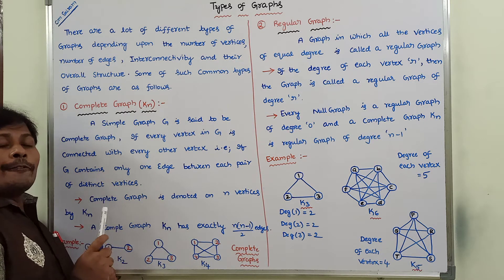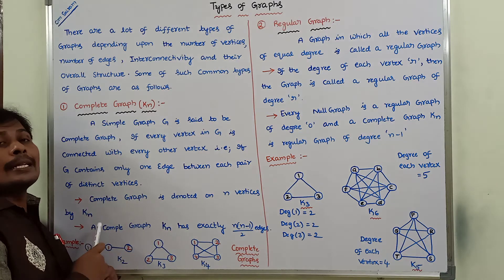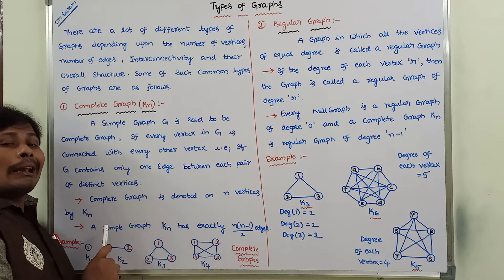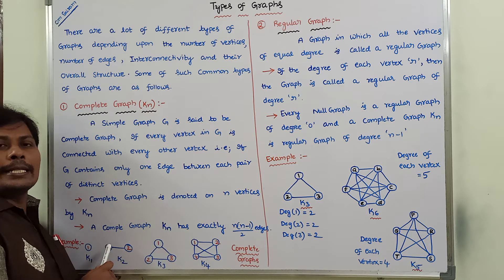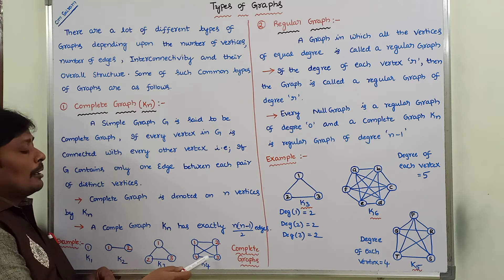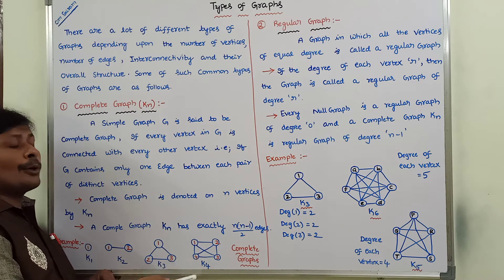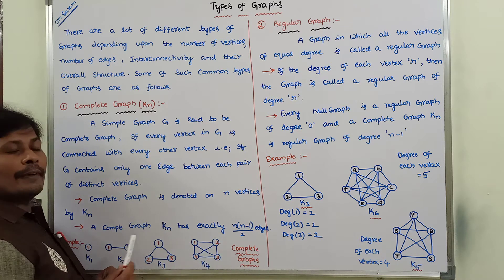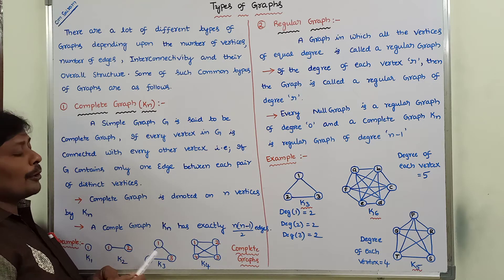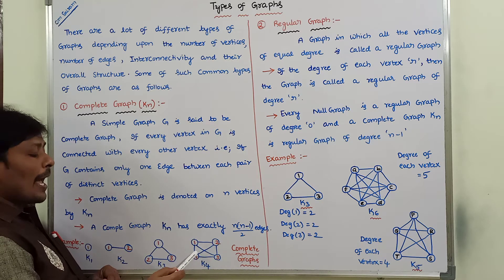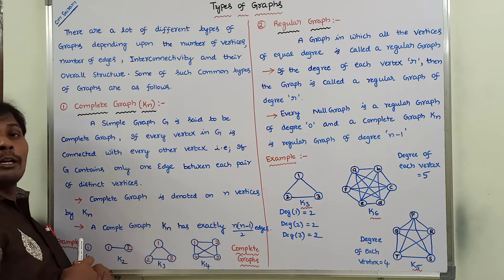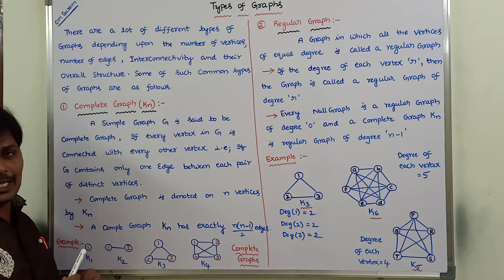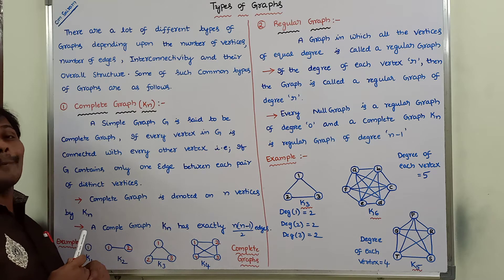To be a complete graph, the graph must be a simple graph. A simple graph means it does not contain any self-loops and parallel edges. Vertex 1, 2, 3, and 4 do not contain any self-loops. There are no parallel edges between any pair of vertices. Parallel edges means two vertices are connected by more than one edge.